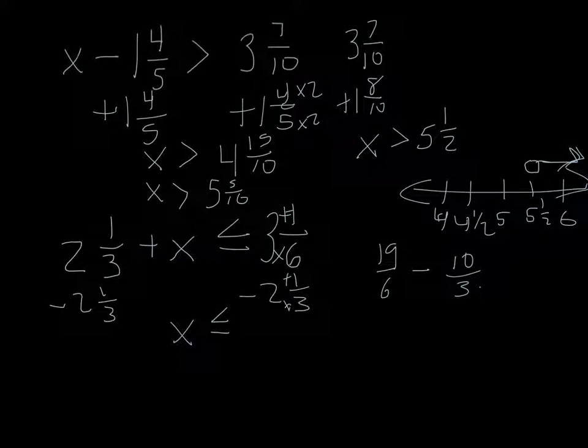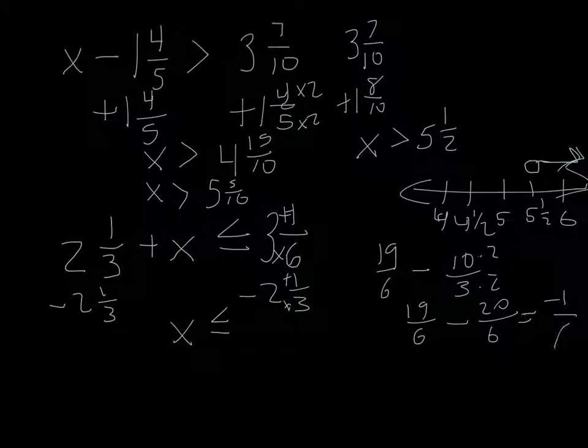Which would actually be, we convert that to common denominators, times 2 here, make that common denominator 6. I would get 19 sixths minus 20 sixths, which would result in negative 1 sixth.